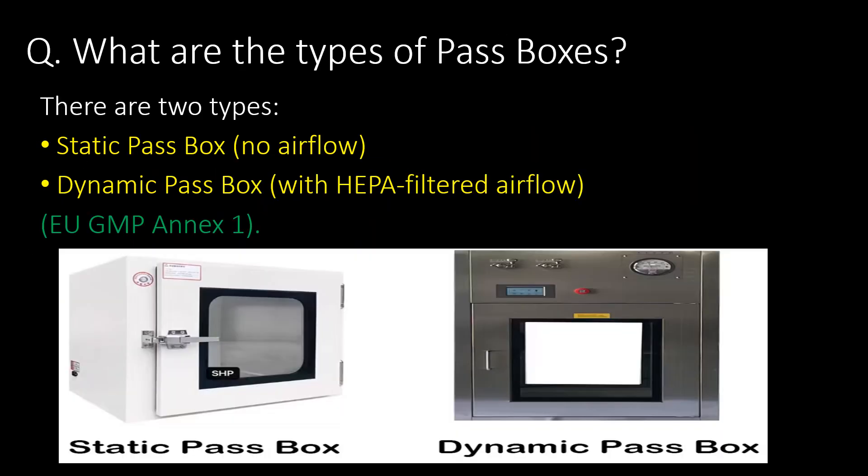What are the types of pass boxes? As per EU GMP Annex 1, there are two types. First, static pass box with no airflow, and second is dynamic pass box. Dynamic pass boxes are with HEPA filtered airflow.